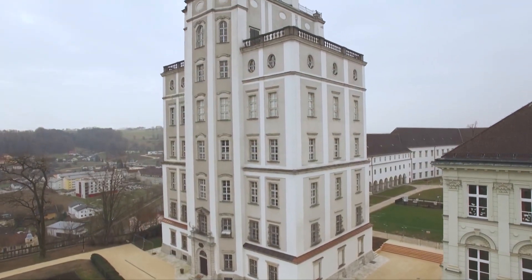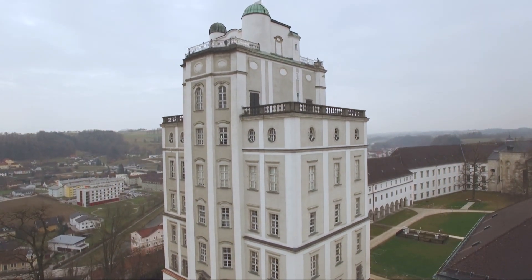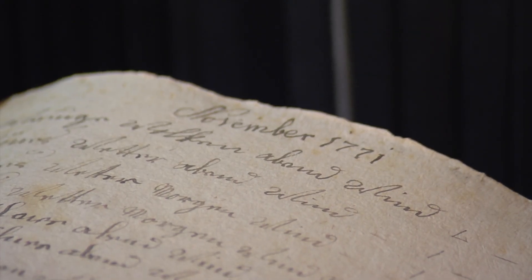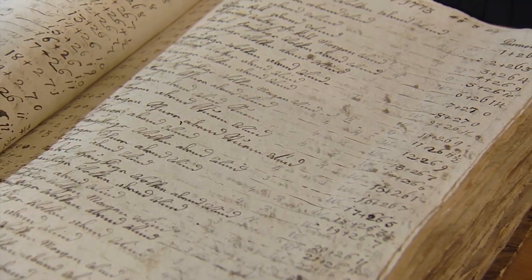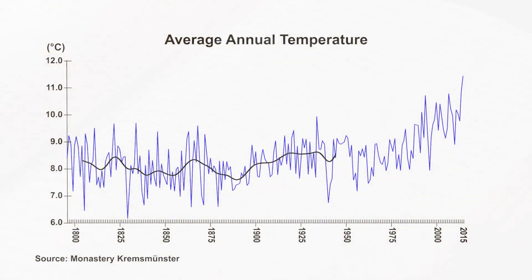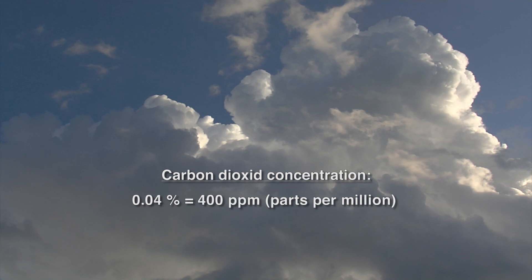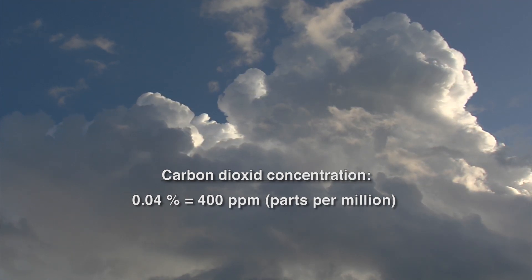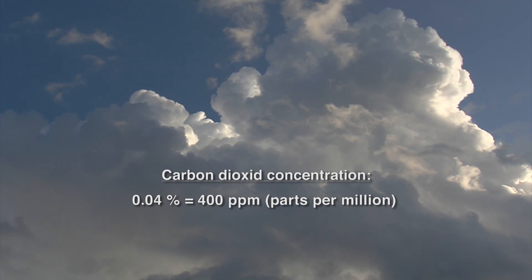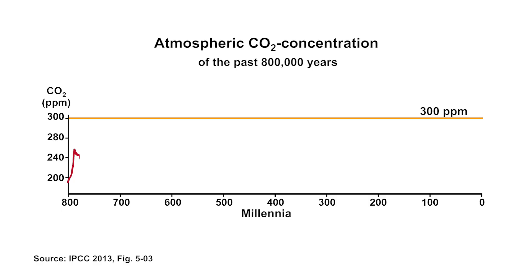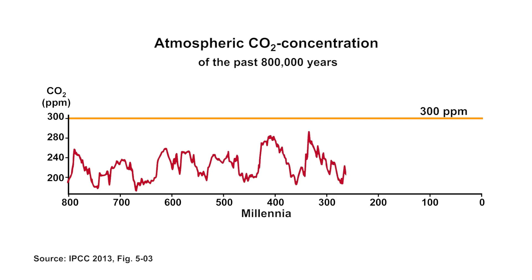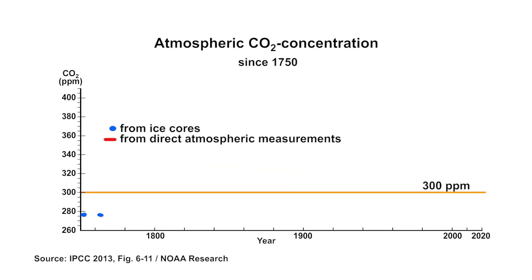Since the 18th century, weather and temperatures were recorded on a daily basis in the monastery observatory Kremsmünster, as well as in many other convents and observatories. These records show a rise in temperatures, in particular in the last decades. The answer lies in the CO2 concentration in the atmosphere. At the moment, the atmospheric concentration is 0.04%, which corresponds to 400 parts per million, abbreviated ppm. In the past 800,000 years, it fluctuated between 180 ppm in cold eras and 280 ppm in warm eras. A remarkable increase of carbon dioxide could not be detected until the 18th century.